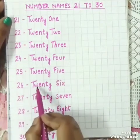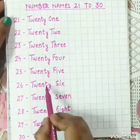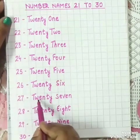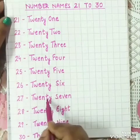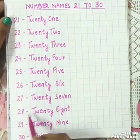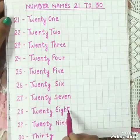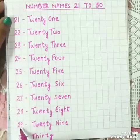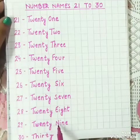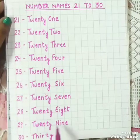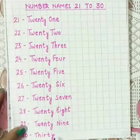26 - T, W, E, N, T, Y, S, I, X - TWENTY SIX. 27 - T, W, E, N, T, Y, S, E, V, E, N - TWENTY SEVEN. 28 - T, W, E, N, T, Y, E, I, G, H, T - TWENTY EIGHT. 29 - T, W, E, N, T, Y, N, I, N, E - TWENTY NINE. 30 - T, H, I, R, T, Y - THIRTY.